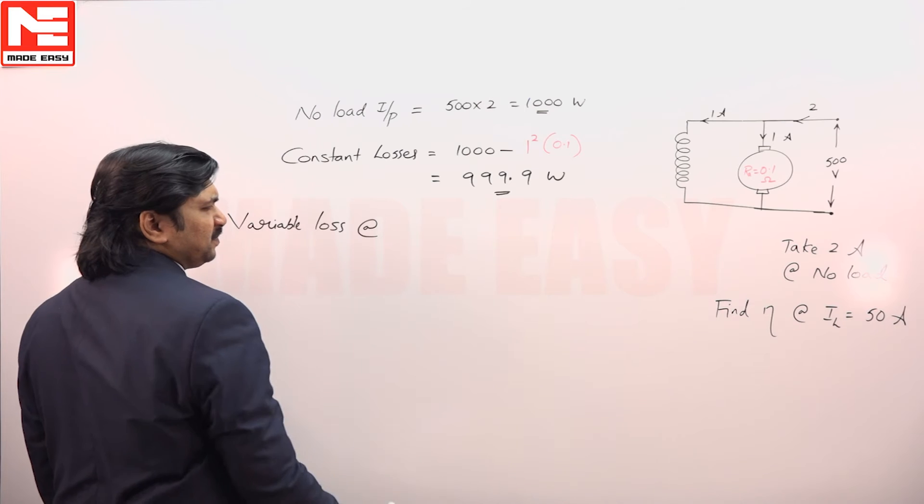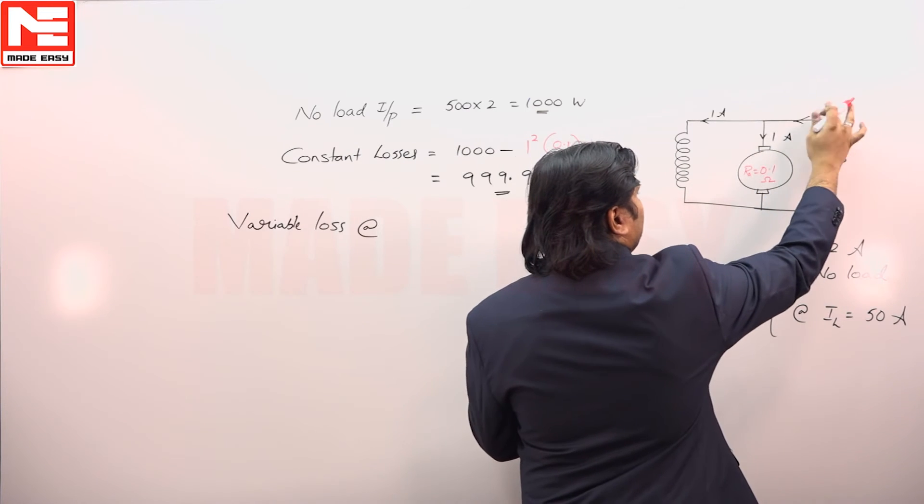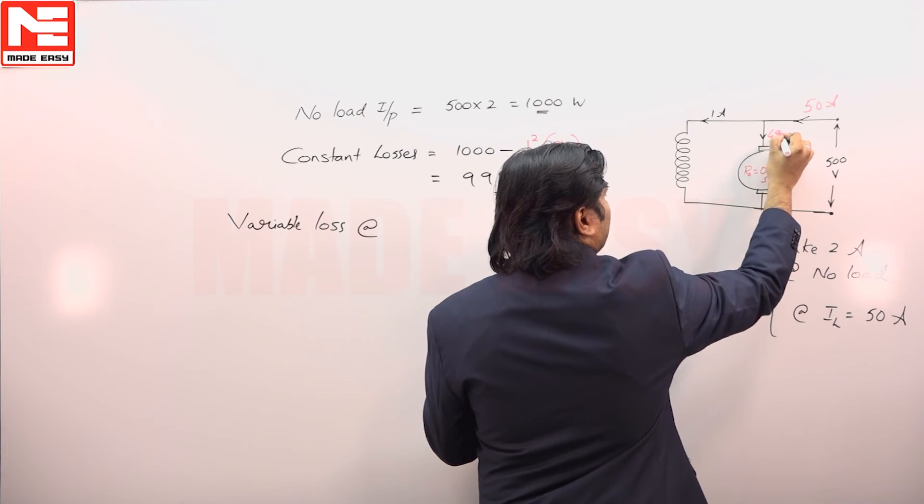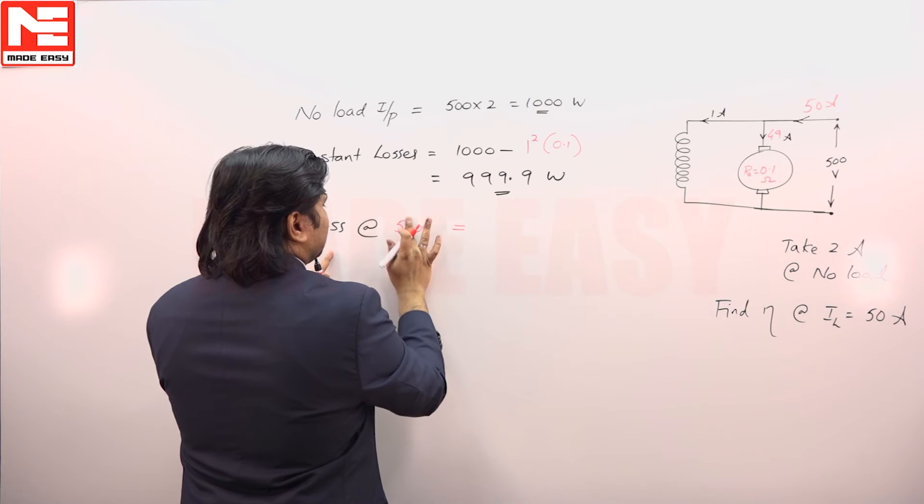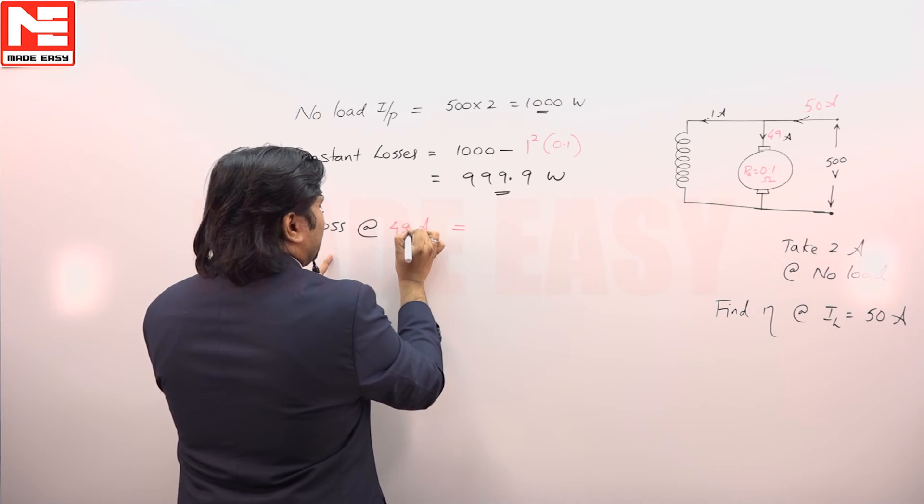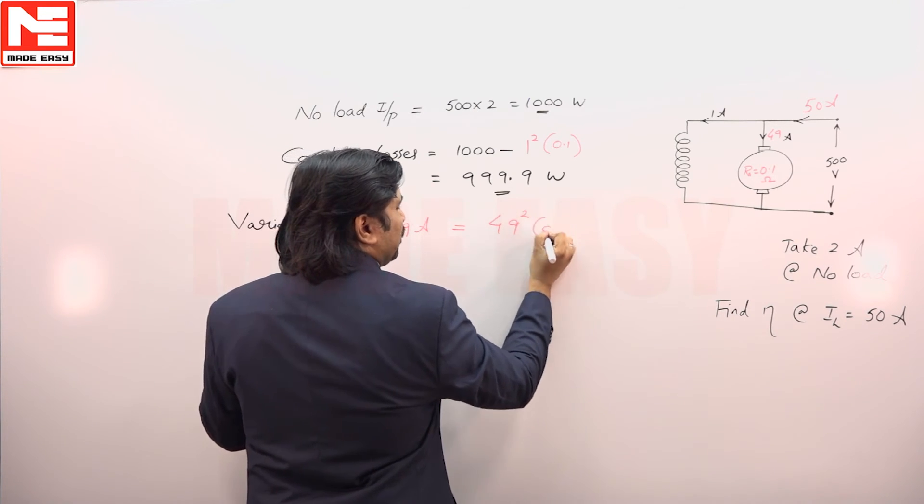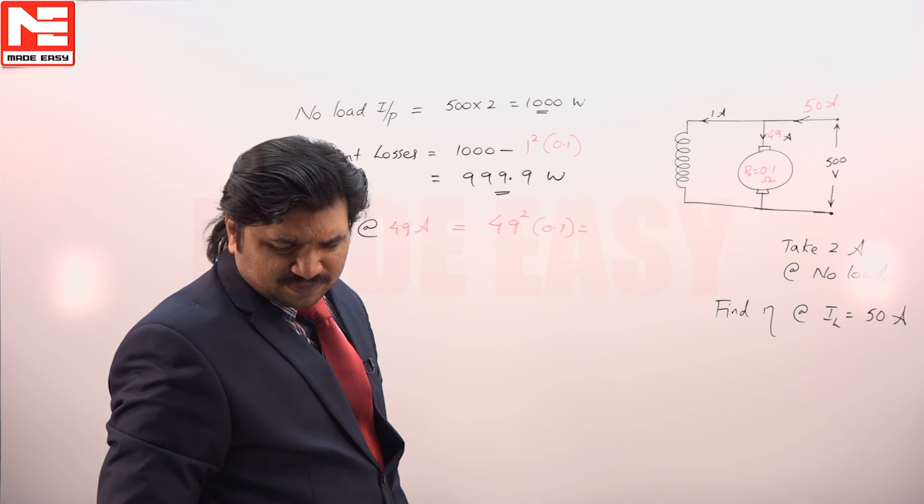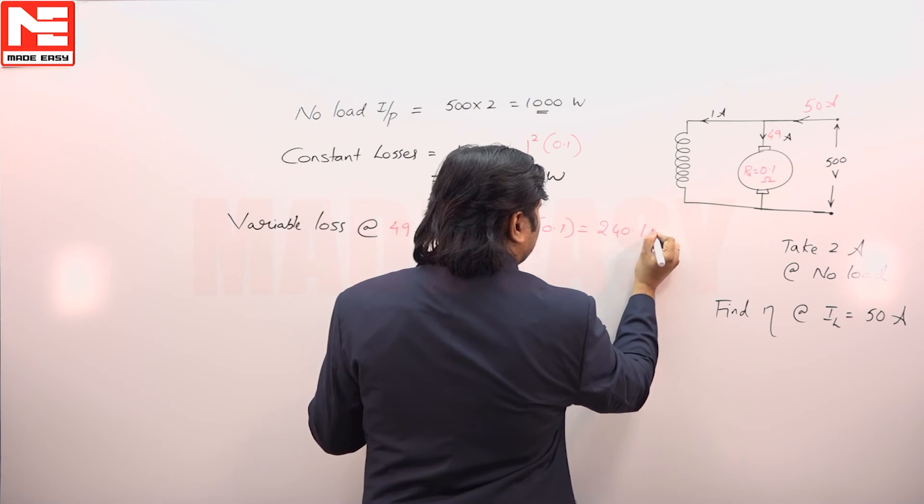Variable loss at 50 ampere. If a motor draw 50 ampere, it is a shunt motor. Field current is I always that. This is 49. So, variable loss at 50 amperes, now the current flowing in the armature is 49. It is 49 square into 0.1. What is this value? 240.1.